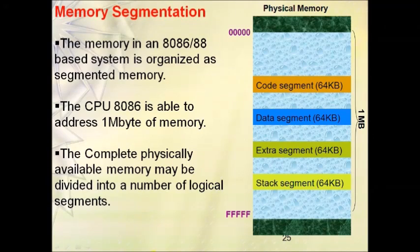In this session we will discuss memory segmentation. As we know, the amount of memory that can be interfaced with the 8086 is 1MB. That depends on the number of address lines — since it has 20 address lines, we can interface up to 1MB of memory.